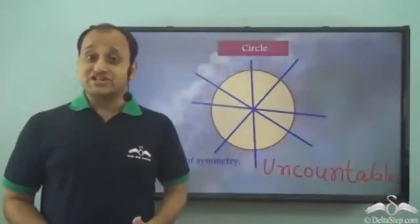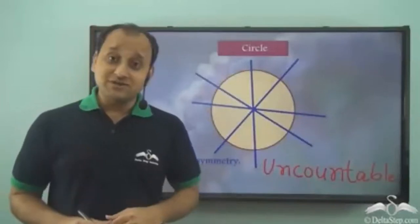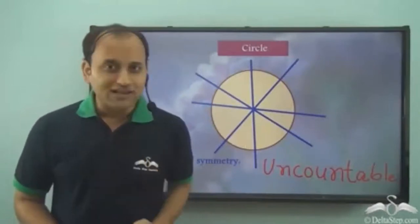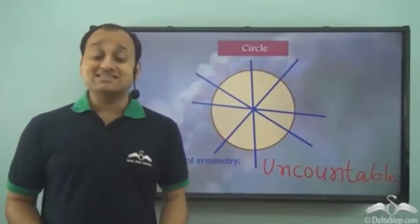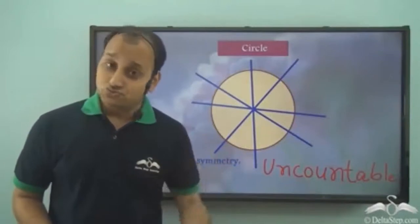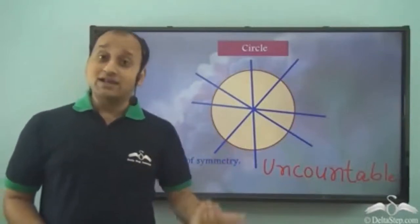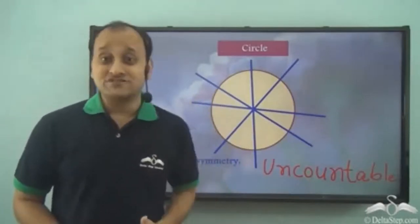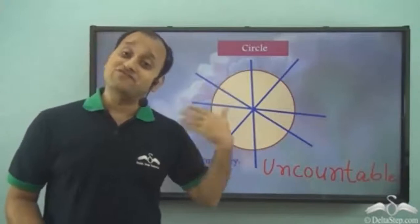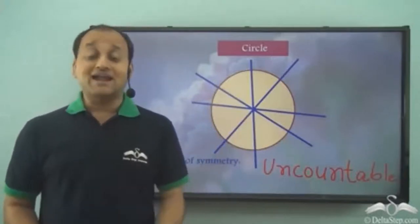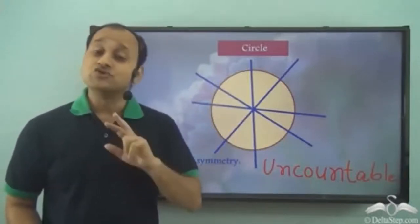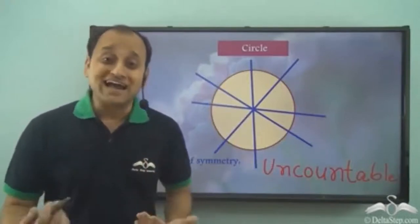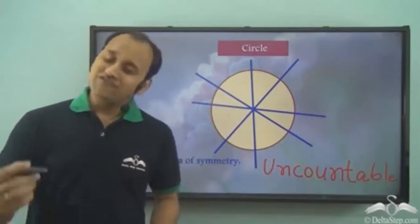Even geometrical shapes show reflection symmetry. In the case of a square, we have a total of four lines of symmetry. In the case of a rectangle, we have two lines of symmetry. In the case of a triangle, it can have three, one, or no lines of symmetry depending upon the type of triangle. In the case of an oval, we have two lines of symmetry. And in the case of a circle, we can have uncountable lines of symmetry.